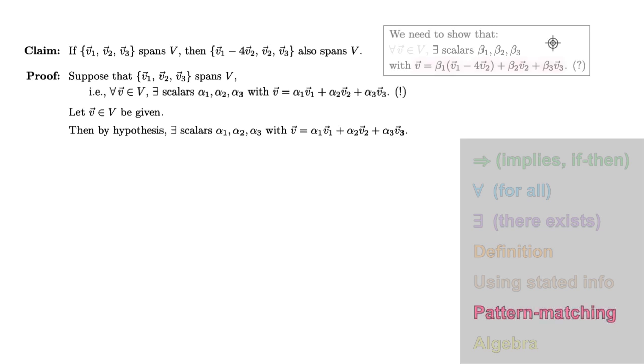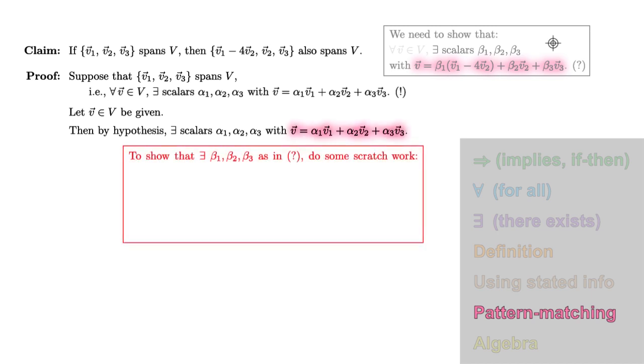We should now notice something. We're looking for betas that build the vector v in a certain way, and we now know something telling us about how to build v. We can use scratch work, not included in the proof, to do a little pattern matching to find what values we want to take for our betas. On the one hand, we know what v equals. On the other hand, we know what we want to show v equals. Let's set those two expressions equal to one another.